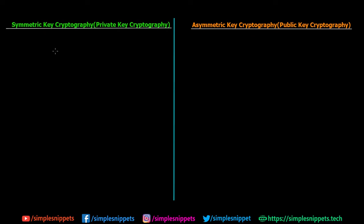Welcome back to a new video tutorial on network security or information security. In this video we're going to be taking a theoretical look at the concept of symmetric key cryptography versus asymmetric key cryptography, also known as private key versus public key cryptography. There are two different ways in which cryptography happens in encryption and decryption algorithms: symmetric or asymmetric.